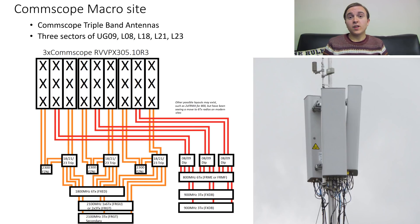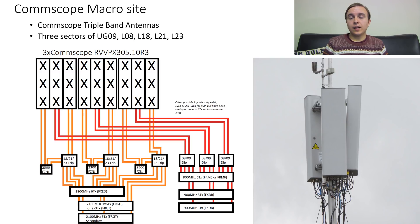The next macro site is a little bit simpler — but only a bit. This one resembles a fairly conventional tri-sector macro site, albeit on a temporary kind of pole. It uses three triple-band CommScope antennas, each with one low band and two high bands, and carries U09, L08, L18, L21 and L23.